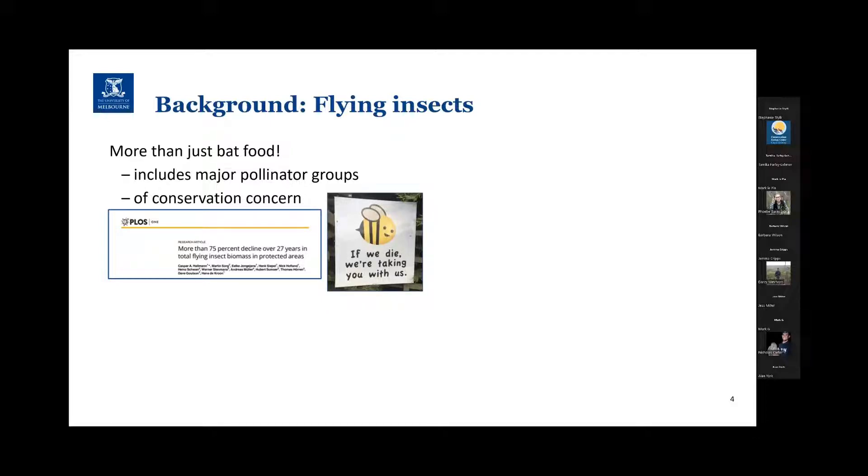There's a paper recently published that suggested a decline in one area of over 75 percent. So it's a group that we should be focusing on, not just as food for a wide range of vertebrates, but also biodiversity in their own right.